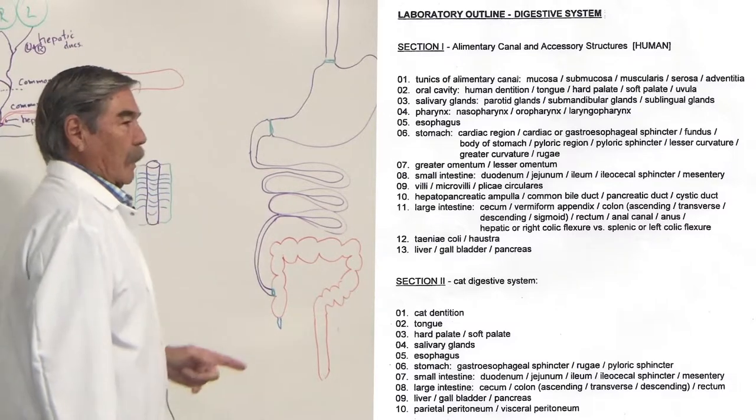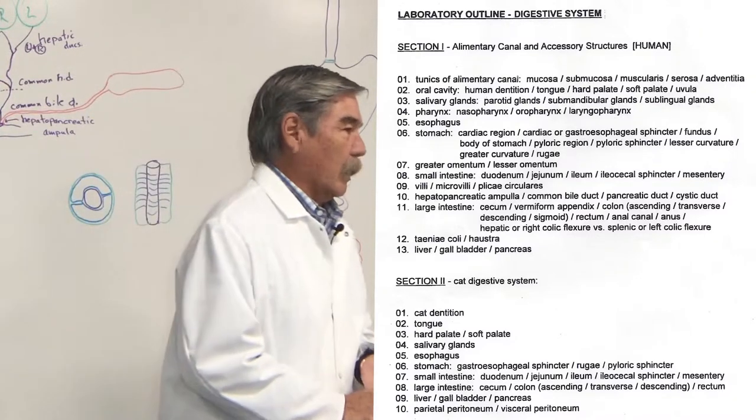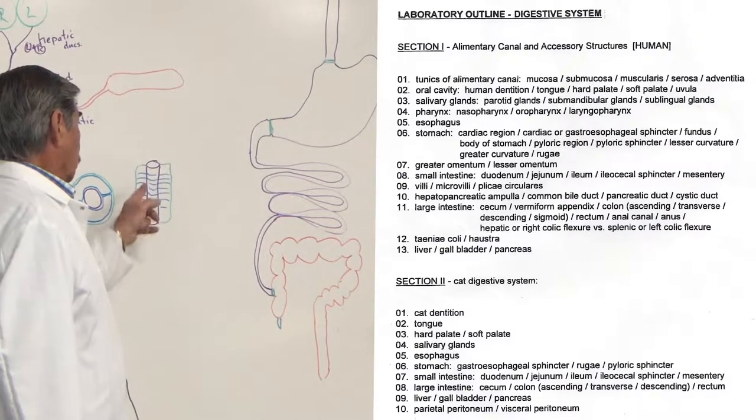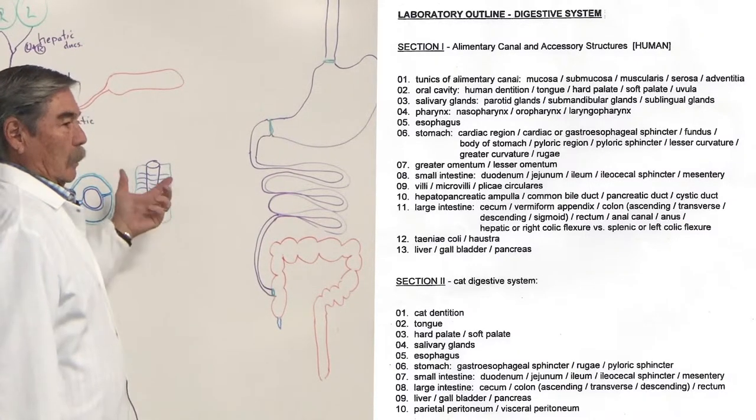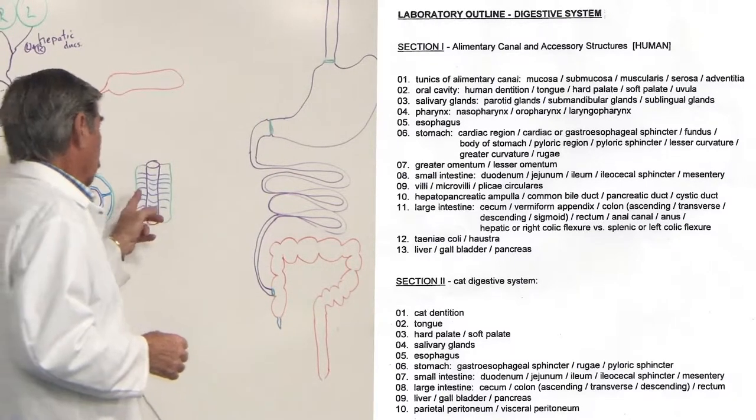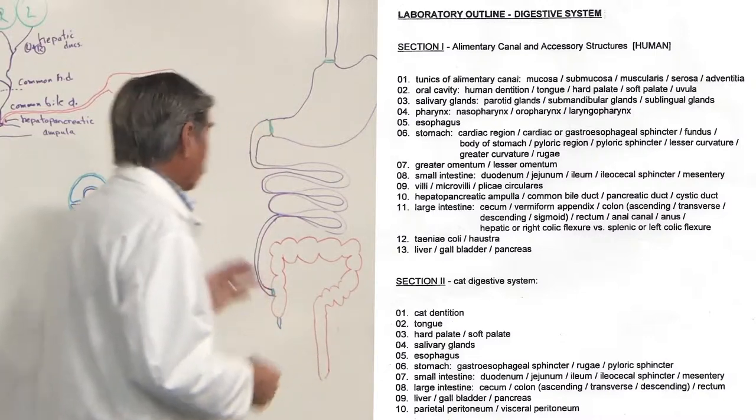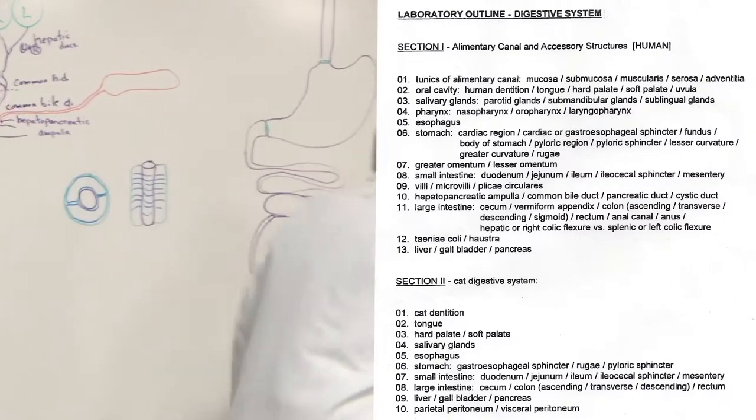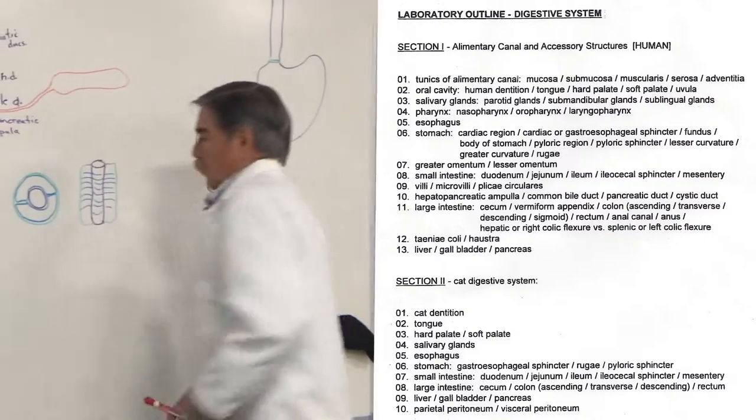Embryonically, the elementary canal, which is the GI tract or the digestive tube, is being suspended in an outer tube, your body, with a membrane. If you do a cross section through here, this is what it looks like.